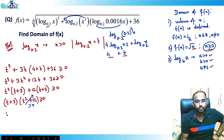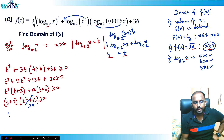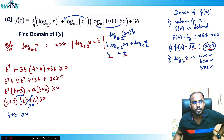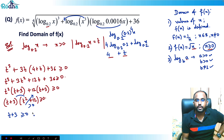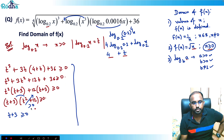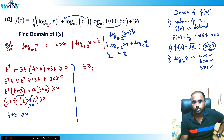I can factor this as t²(t + 3) + 12(t + 3) ≥ 0, which gives (t + 3)(t² + 12) ≥ 0. Now t² + 12 is always positive because t² ≥ 0 and adding 12 keeps it positive. So the only condition left is t + 3 ≥ 0, meaning t ≥ −3.